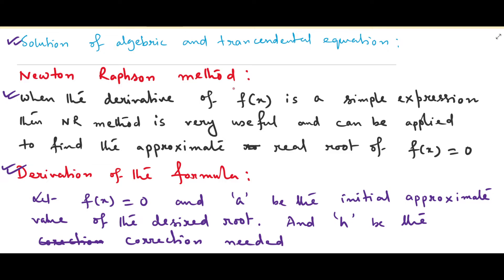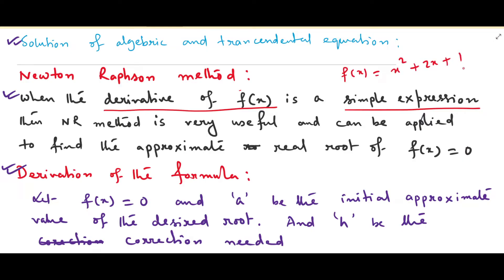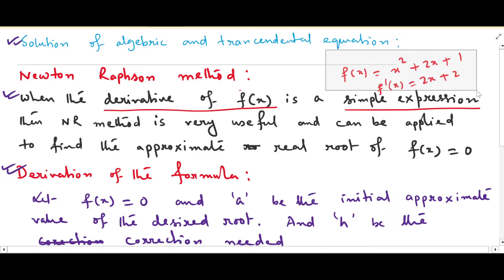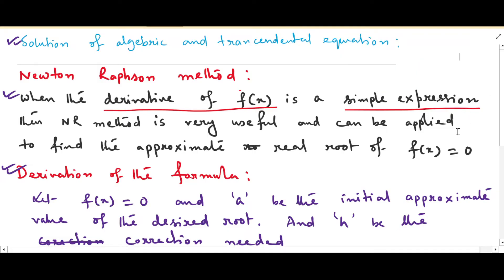We can use Newton-Raphson method when the derivative of f is a simple expression. For example, if you have the function x² + 2x + 1 and differentiate it, you get 2x + 2 — a very simple expression. This type of simple derivative means you can easily apply Newton-Raphson method to find the root of the given equation.